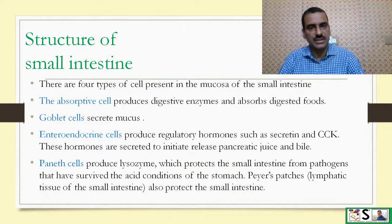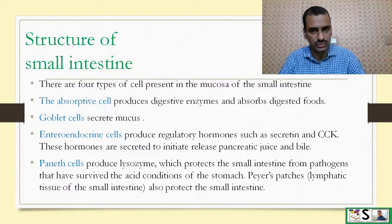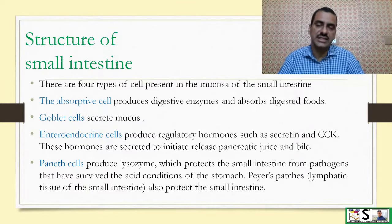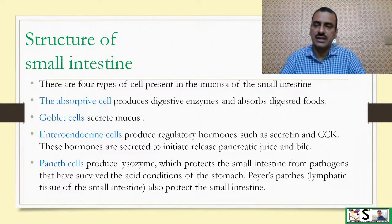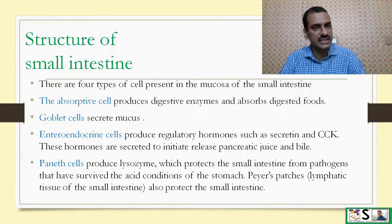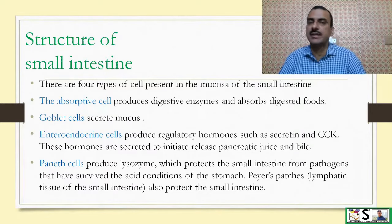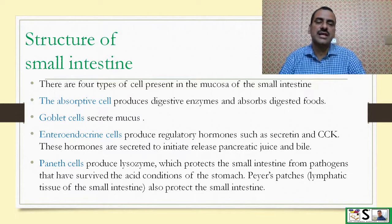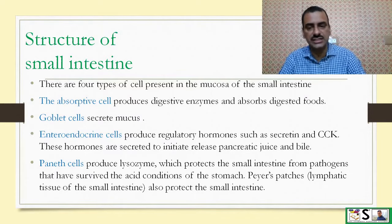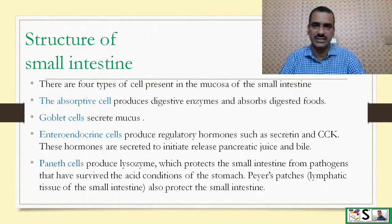There are four types of cells present in the mucosa of the small intestine. Absorptive cells, also known as enterocytes, produce digestive enzymes and absorb digested foods, and are the most abundant. Goblet cells are present in between and secrete mucus. Enteroendocrine cells produce regulatory hormones such as secretin and cholecystokinin, which initiate release of pancreatic juices and bile. Paneth cells produce lysozyme, which protects the small intestine from pathogens that survived the acid conditions of the stomach. Peyer's patches, which are lymphatic tissue, also protect the small intestine from bacterial attack.